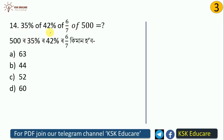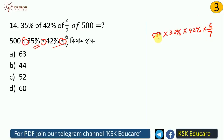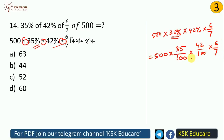Next problem: find 35% of 42% of 6/7 of 500. We need to calculate this step by step. We write 35/100 times 42/100 times 6/7 times 500. Simplifying: 500 and 100 cancel partially, and 6 and 7 reduce the expression.